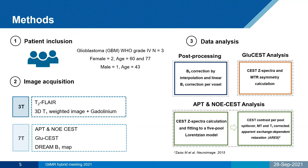To analyze the APT and NOE CEST data, we fitted the Z-spectra to a 5-pool Lorentzian model, and CEST metrics for each pool with correction for spillover, MT, and T1 relaxation were calculated. In the end, it yielded the AREX contrast, which stands for apparent exchange-dependent relaxation.